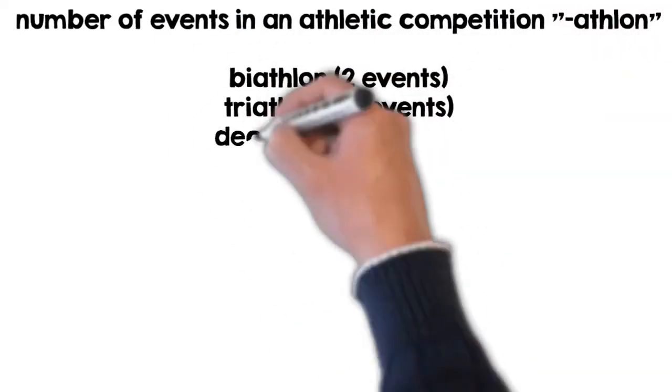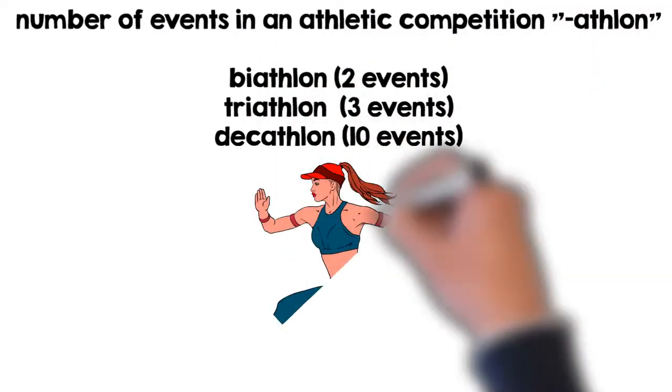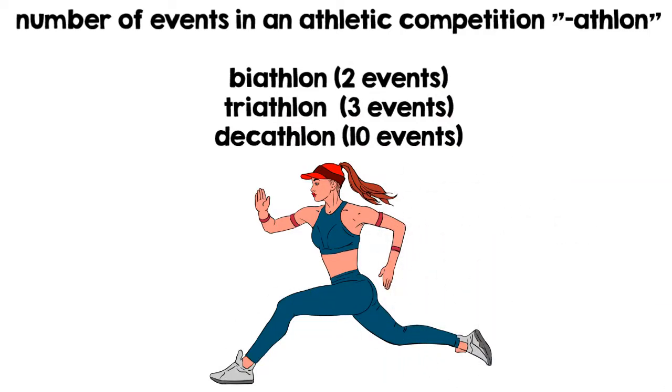Here's another example. The number of events in an athletic competition is an athlon. If you know that bi means two, then a biathlon is two events. If you know that tri means three, then a triathlon is three events. If you know that deca means ten, then a decathlon would be ten events.